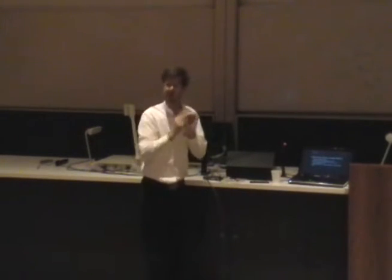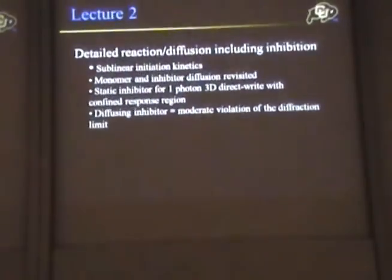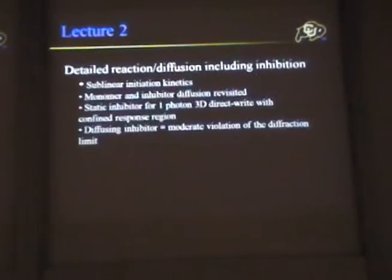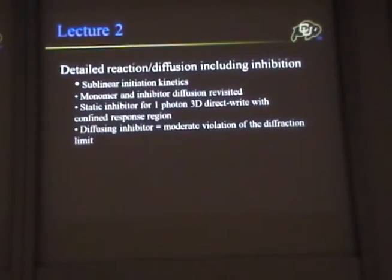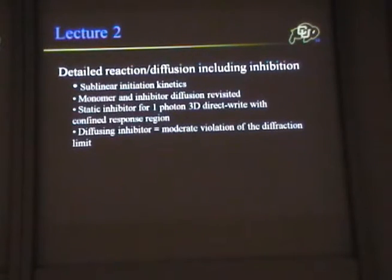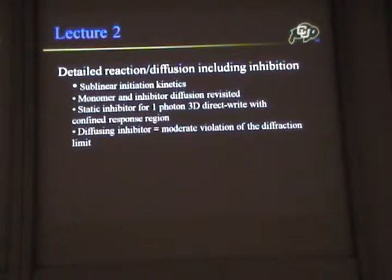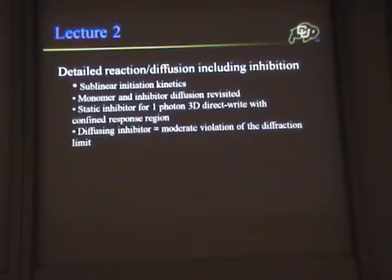This is about looking at that termination species and what we can do with it. We will be talking about two-photon polymerization in 3D. You can do many of the same things with one-photon polymerization, and that's one of the important messages here. Two-photon gives you small confinement and rejection of out-of-focus exposure, but in two-photon you worry about needing a $100,000 laser because of the very small cross-section.